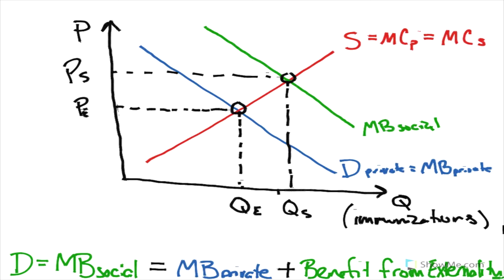So at this socially optimal quantity, consumers are only willing to pay this much for that many immunizations. To get to here, this cost needs to be borne by someone. Usually this will be done by a subsidy from the government, either to the producers or the consumers to make vaccines cheaper.